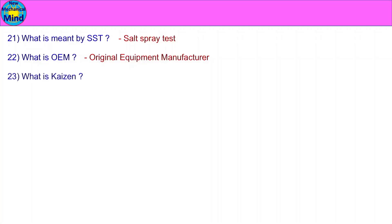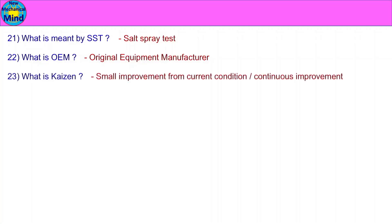What is Kaizen? Kaizen means small improvement from the current condition, or continuous improvement.